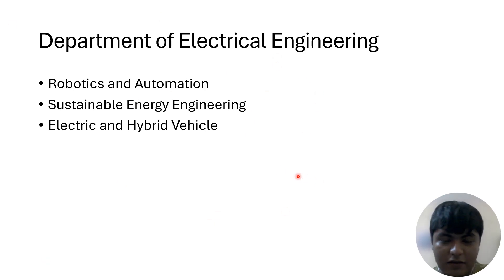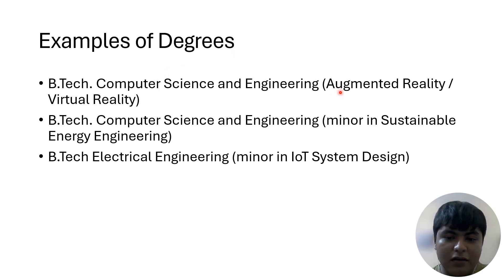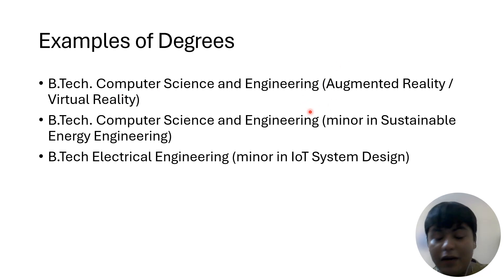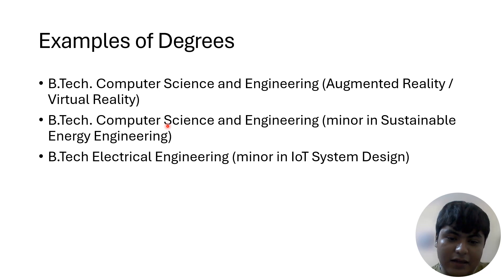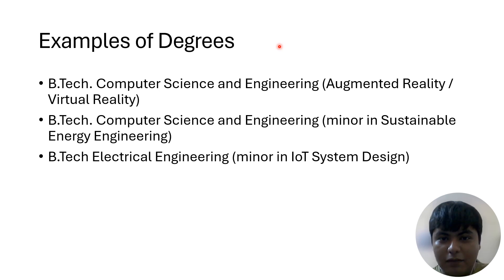These are very interesting streams offered by the Electrical Engineering department. Here are some examples of degrees you can have by designing your own combination. For example: B.Tech Computer Science and Engineering with a specialization in Augmented Reality and Virtual Reality; or B.Tech CSE with a minor in Sustainable Energy Engineering; or B.Tech Electrical Engineering with a minor in IoT System Design. This gives you an idea of everything offered by the Faculty of Technology up to 2025.